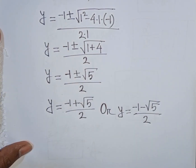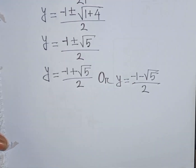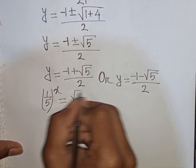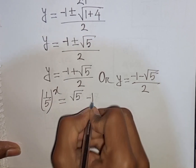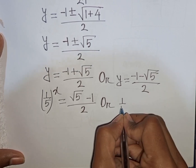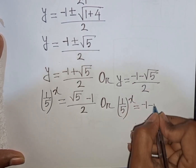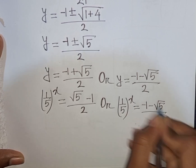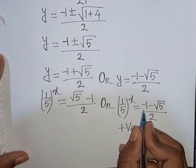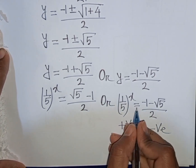Remember that y equals (1/5)^x, which is always positive. But (minus 1 minus square root of 5) divided by 2 is negative — positive cannot equal negative, so this solution is rejected. We keep y equals (square root of 5 minus 1) divided by 2.